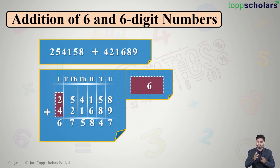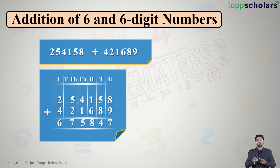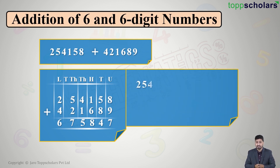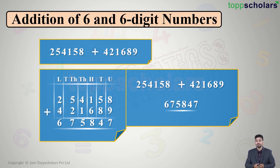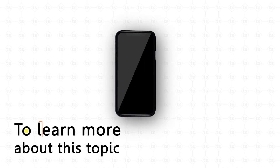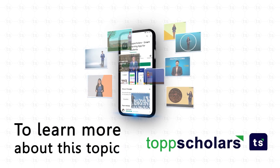Our answer is done. We have added two lakh fifty four thousand one hundred and fifty eight plus four lakh twenty one thousand six hundred and eighty nine to get the answer six lakh seventy five thousand eight hundred and forty seven. So we have seen how to add a six digit number with another six digit number. To learn more, download the Top Scholars app.